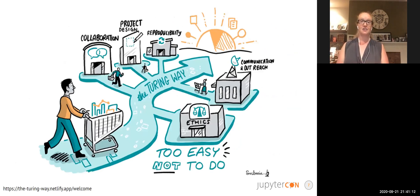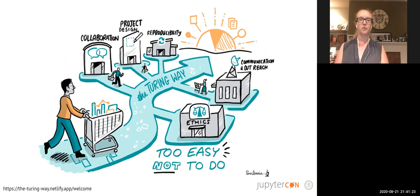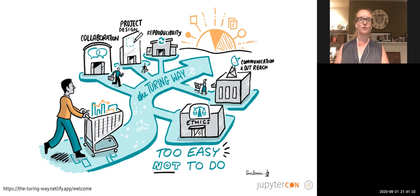The Turing Way started out as a handbook focused on reproducibility, but we expanded last year to include chapters on how to design your project making sure that it is inclusive and reproducible from the beginning, how to communicate your work effectively to diverse audiences, how to embed ethical values in everything that we do, and my personal favorite — to think about how we collaborate with each other.